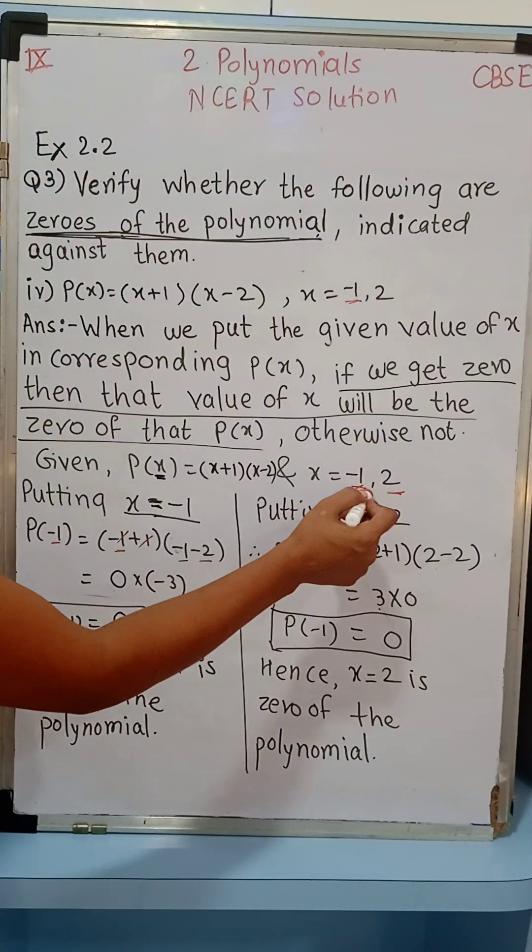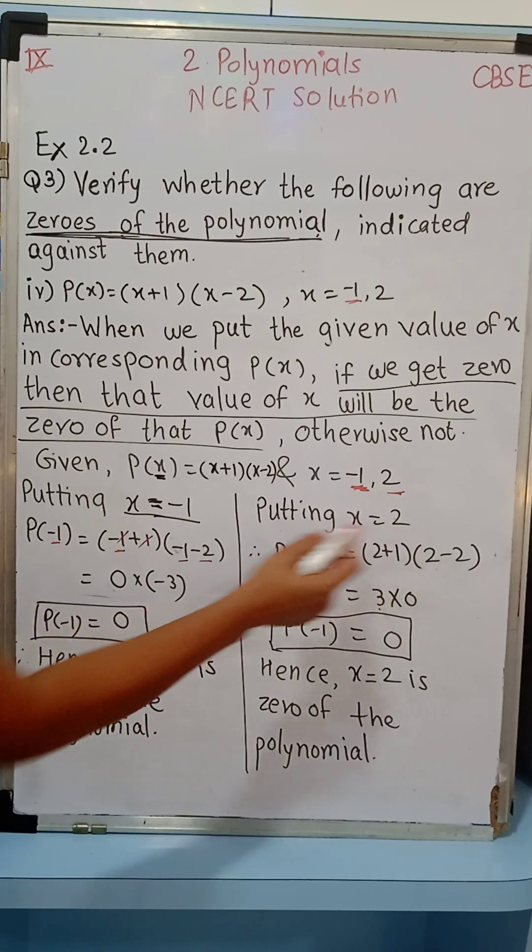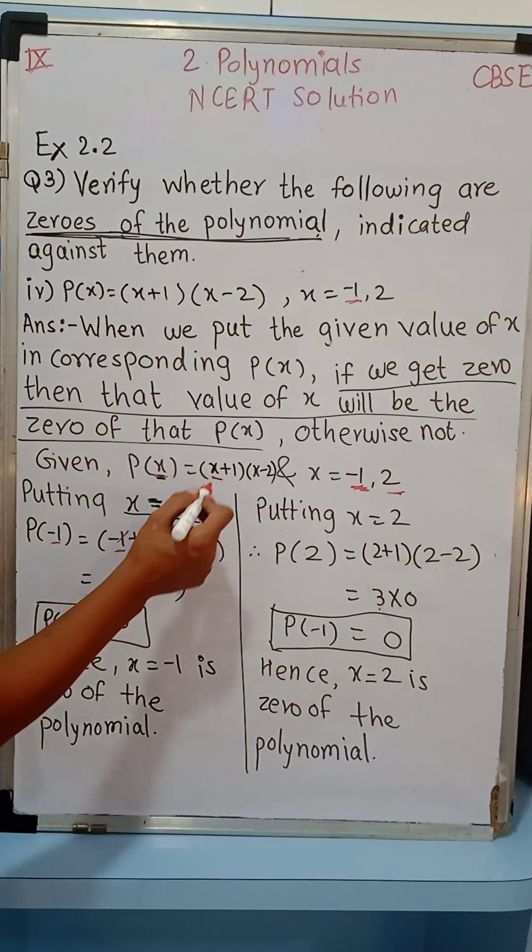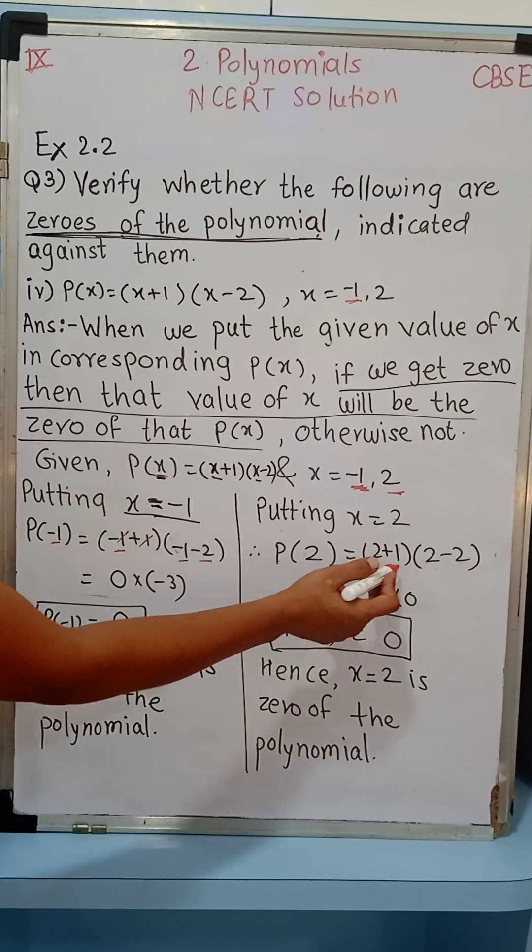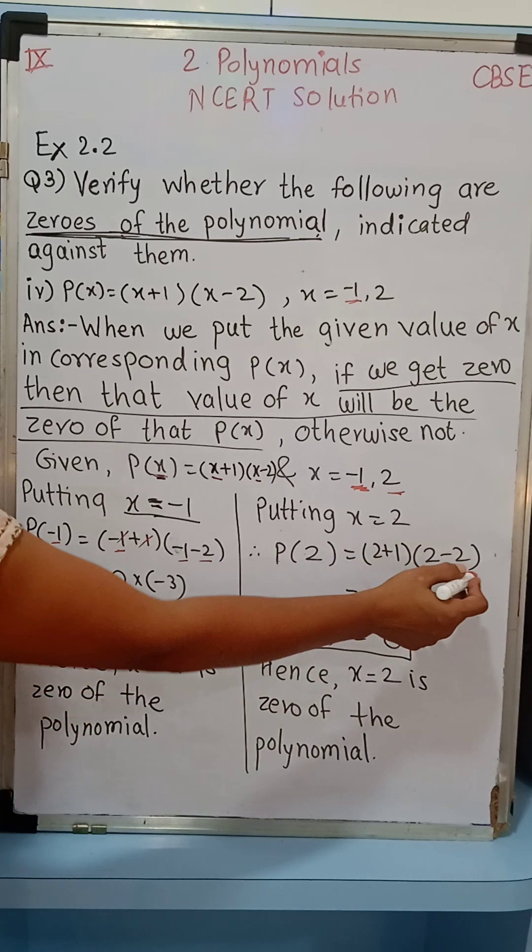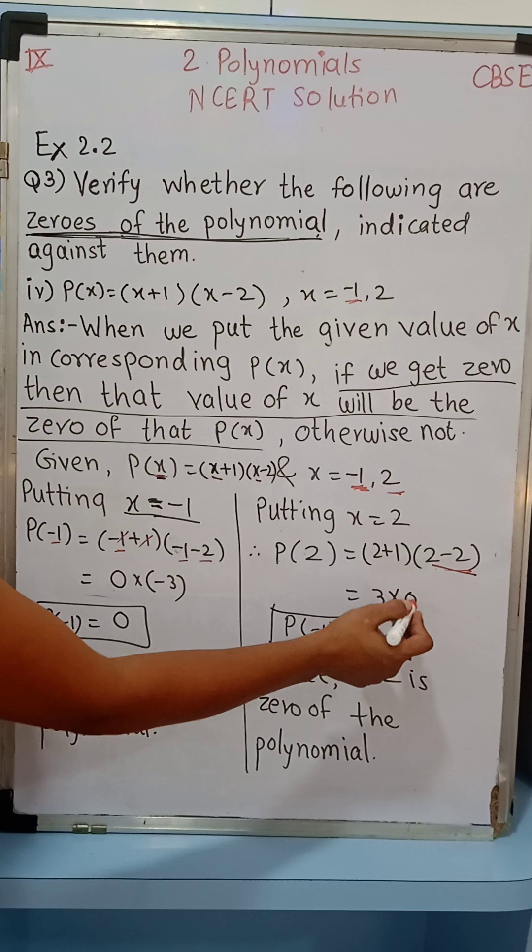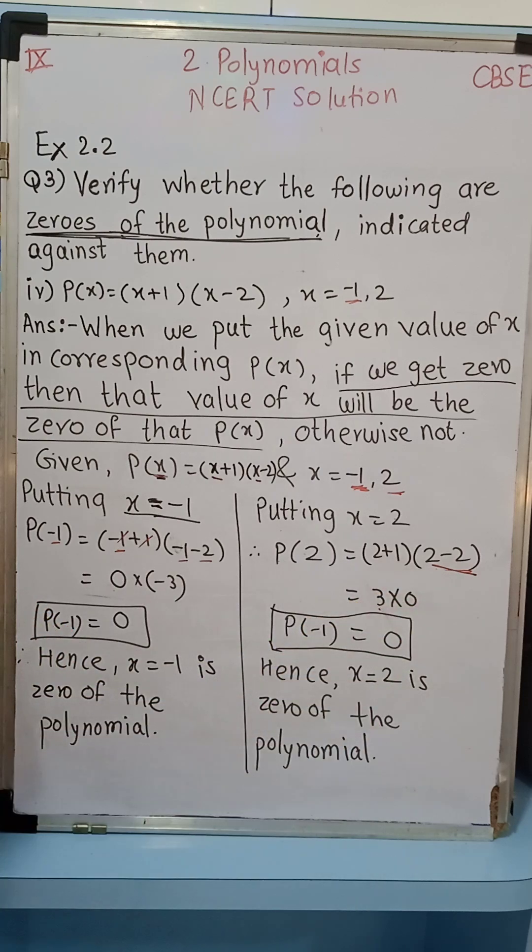Let's now check with x = 2, putting x = 2. Whenever it is x, then we will put x = 2. So P(2) = (2+1)(2-2). Now we are solving this, 2 plus 1 is 3, 2 minus 2 is 0. So 3 into 0 is 0.